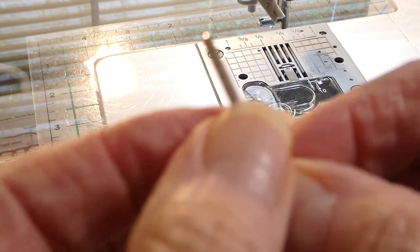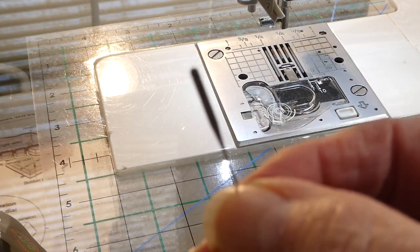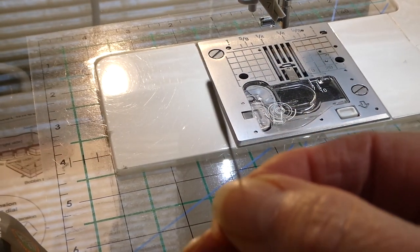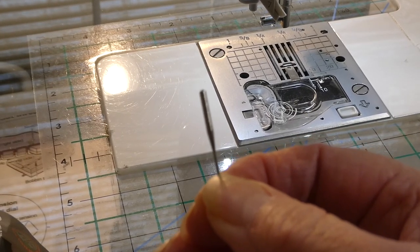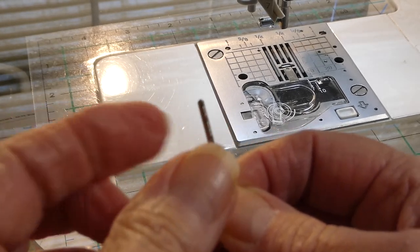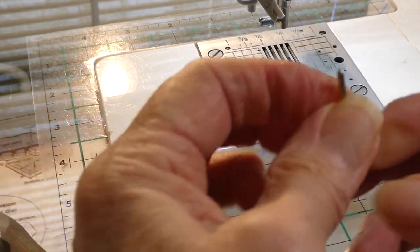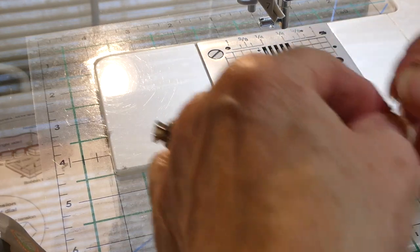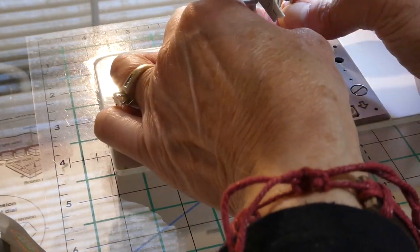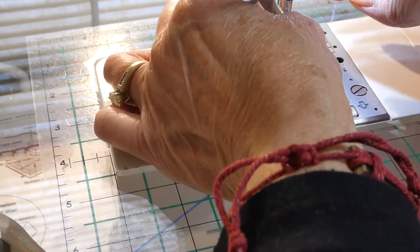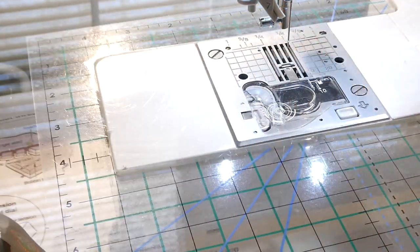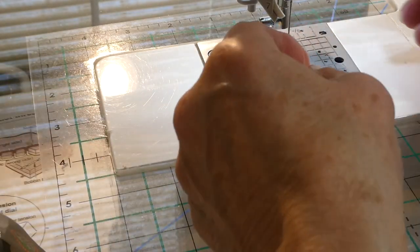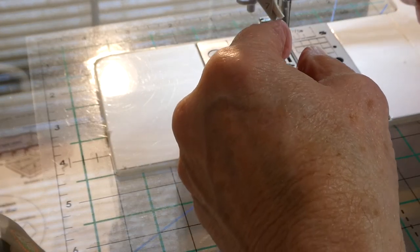And we're going to get us a new needle. And for most machines, your needle will have a flat side like that is right there, and then it'll round off on the other side. And the flat side goes to the back. So I'm just going to put that in and push it up as high as it will go. And hand tighten my screw right here and then come back and tighten it with the screwdriver.